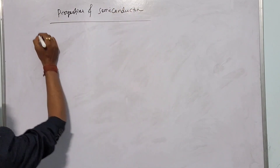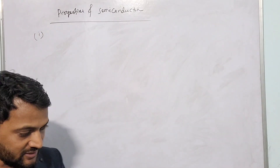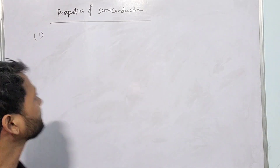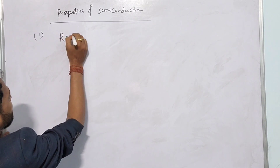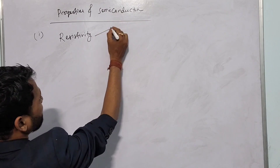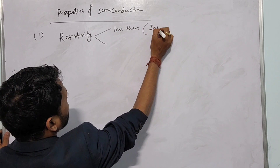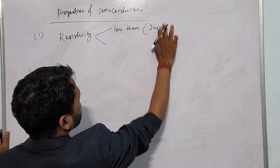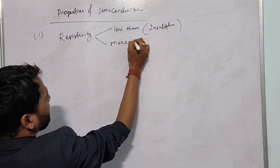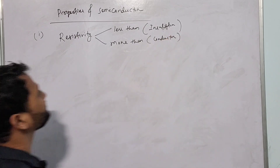The first property is resistivity. The resistivity of semiconductor is less than that of insulator and it is more than that of conductor.